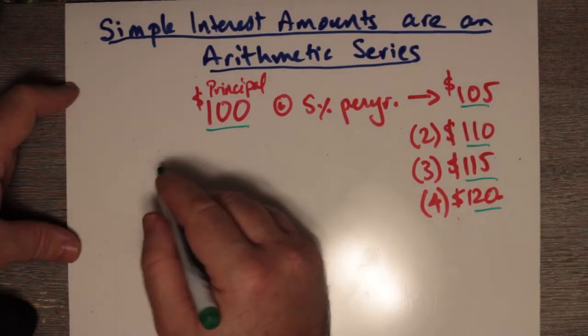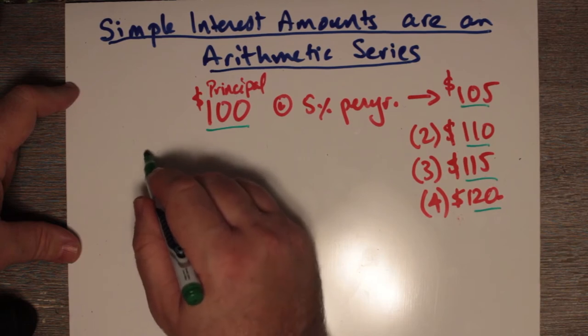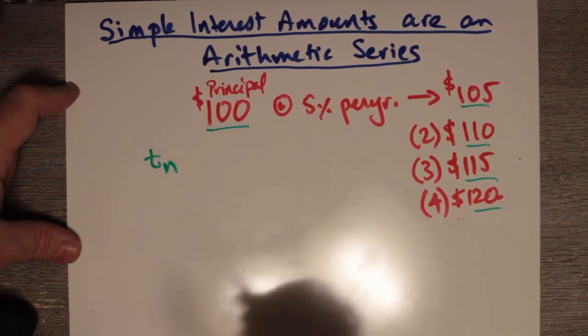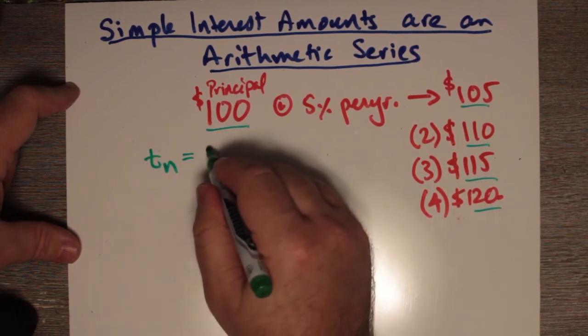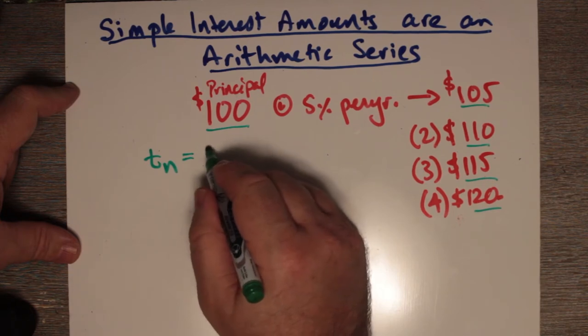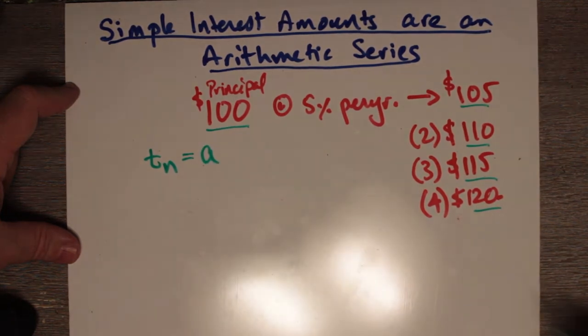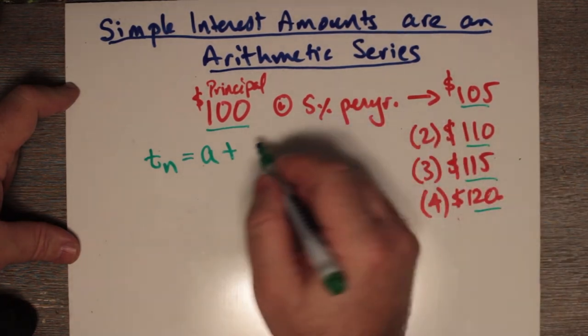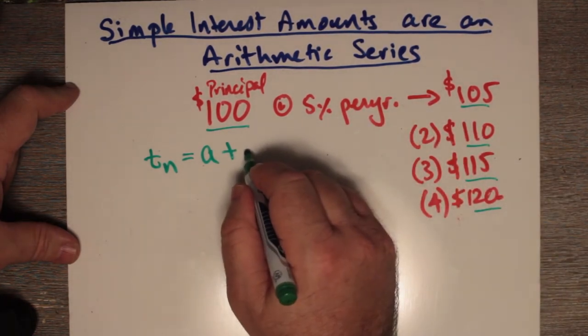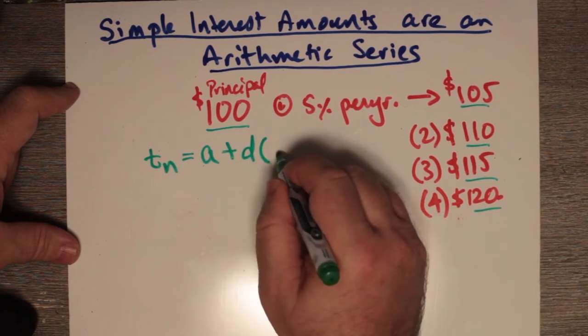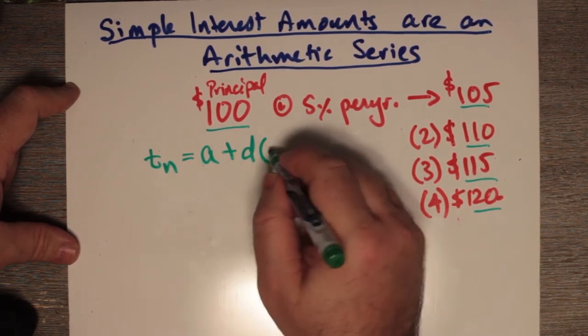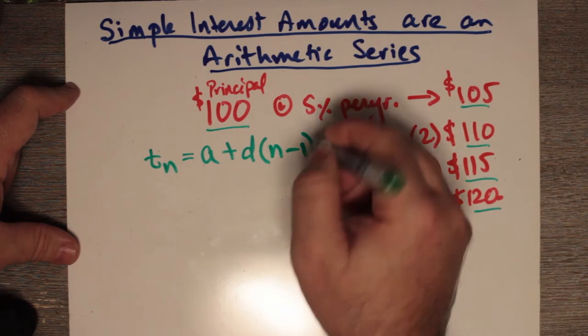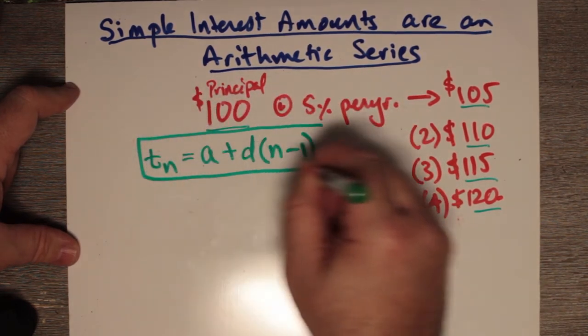If you recall that the nth term in an arithmetic series was the initial number, which we called A, plus the common difference multiplied by, since that's n, we have to say n minus 1. You remember that from chapter 6.